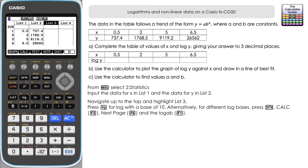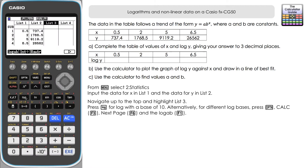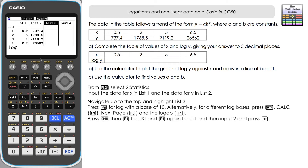If you need a logarithm with a different base, press Option, then F3, Calc, F6 for the next page, and then F1 — you'll find a log to any base button there. But we just need base 10, so we press log, then use Option and F1 for list, select list two, and press Execute.